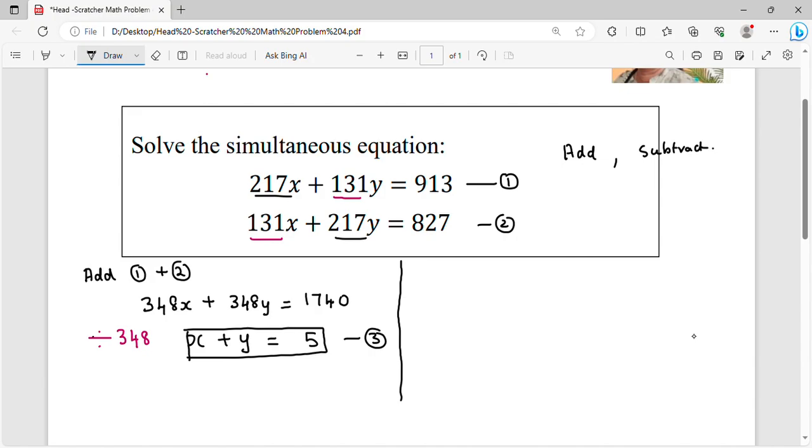And next, subtract 1 minus 2. If I subtract 1 minus 2, I get 217 minus 131 is 86. I get 86x, and this would become negative 86y, because I'm subtracting that, and that is equal to 86. Oh my god! So now you know obviously what you have to do. All you have to do is just divide by 86 and you get such a simple equation which is x minus y is equal to 1.